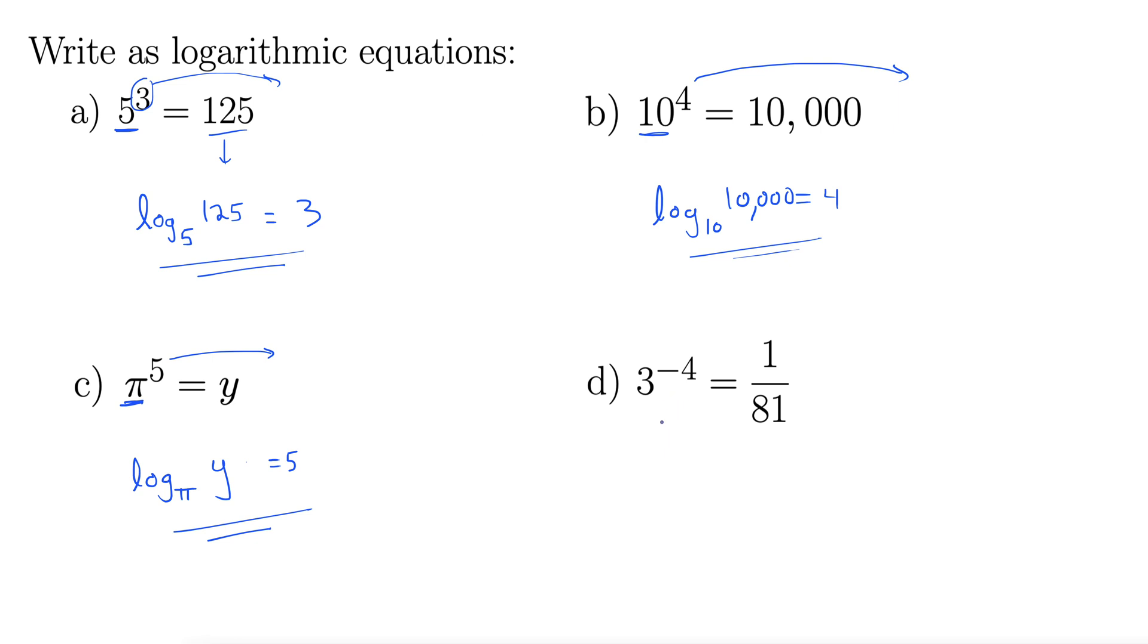All right, not so bad. Let's try d. We have 3 to the negative 4. The same thing works with negative exponents. 3 to the negative 4 equals 1 over 81.